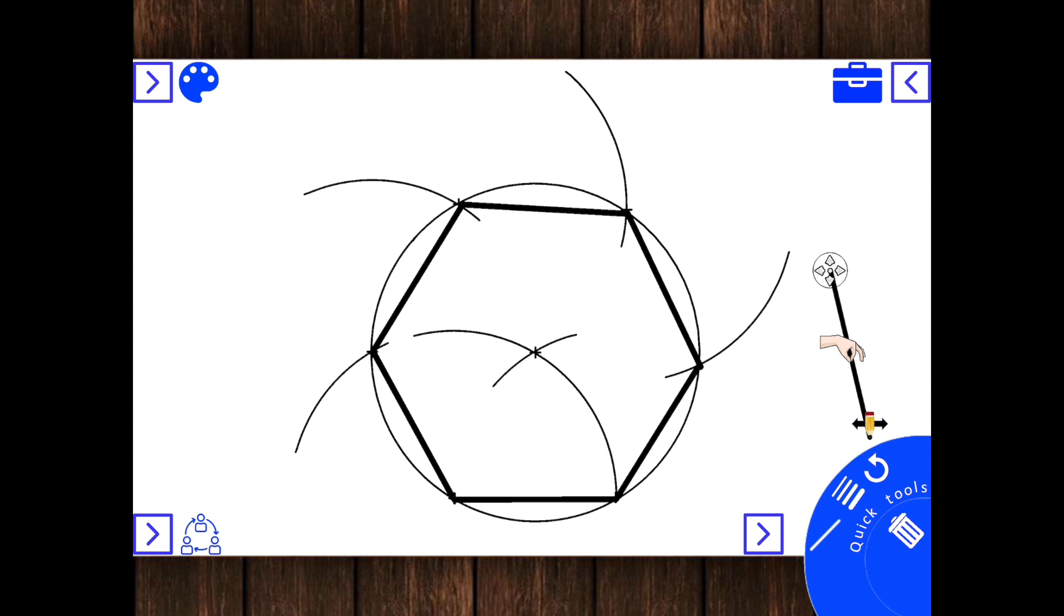Now, obviously, mine won't be as accurate as yours. I'm doing this on the iPad. But if you have a sharp pencil, use your ruler and be very careful with your compasses. You should get a perfect hexagon.